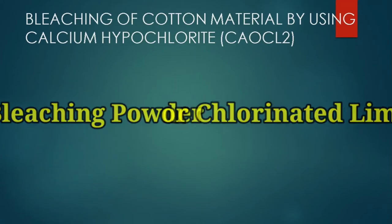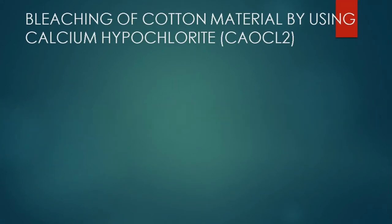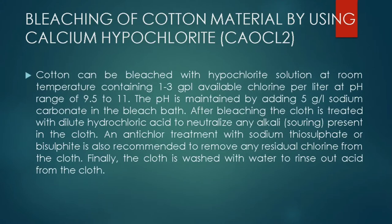It is prepared by reaction of calcium hydroxide and chlorine gas. Cotton can be bleached with hypochlorite solution at room temperature containing 1–3 GPL available chlorine per litre at a pH range of 9.5 to 11. Calcium hypochlorite is a strong oxidizing bleaching agent and is capable of giving oxygen at room temperature.